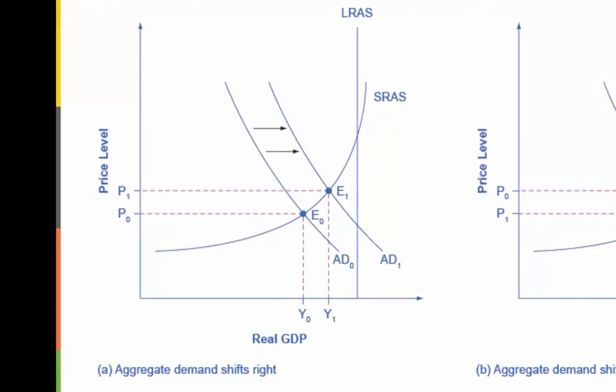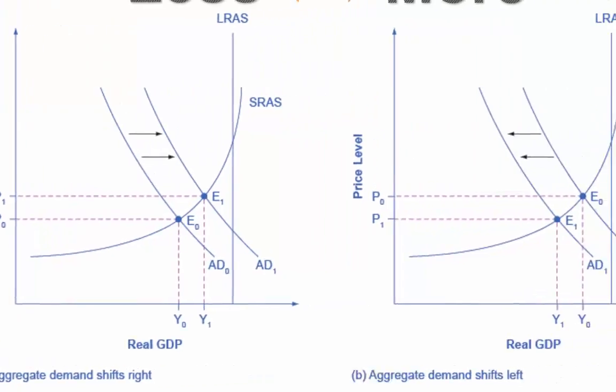An increase in consumer confidence or business confidence can shift aggregate demand to the right from AD0 to AD1. When aggregate demand shifts to the right, the new equilibrium E1 will have a higher quantity of output and also a higher price level compared to the original equilibrium E0. In this example, the new equilibrium E1 is also closer to potential GDP. An increase in government spending or a tax cut that leads to a rise in consumer spending can also shift aggregate demand to the right.